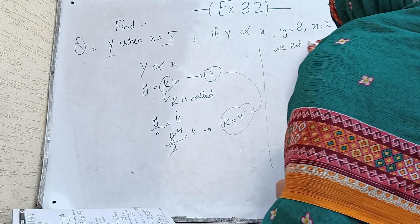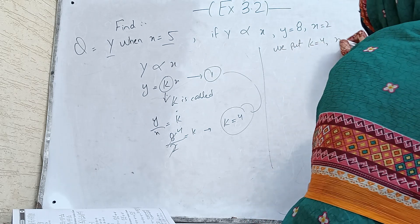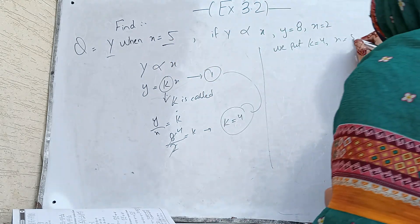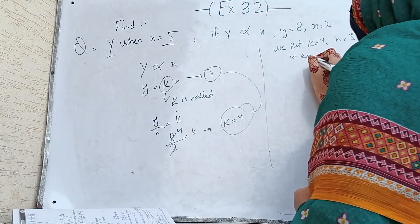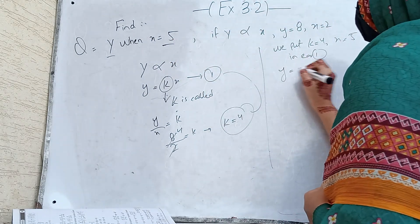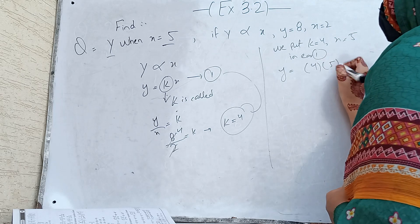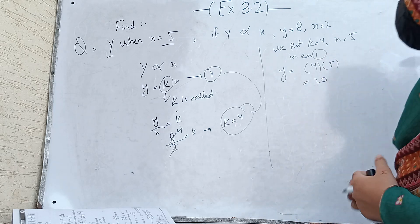We put k equal to 4 and x equal to 5 (the given value) into equation 1. So we have y equal to 4 times 5.